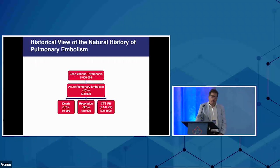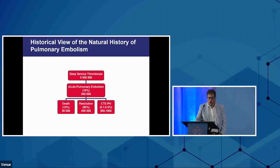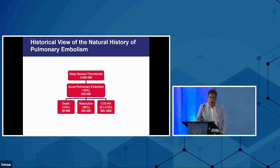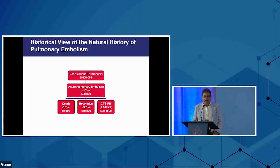I like showing this slide because it's what I showed maybe 15 years ago whenever I gave a PE talk, and I show it now to illustrate how much things have changed. These are American numbers from a couple of decades ago: about 5 million cases of DVT a year, about 10% causing acute pulmonary embolism we diagnose, about 10% of people dying — often before reaching hospital — and about 90% resolving, except for a very few who develop chronic pulmonary hypertension. That resolution number, I think, is very wrong, and I hope to show you that today.